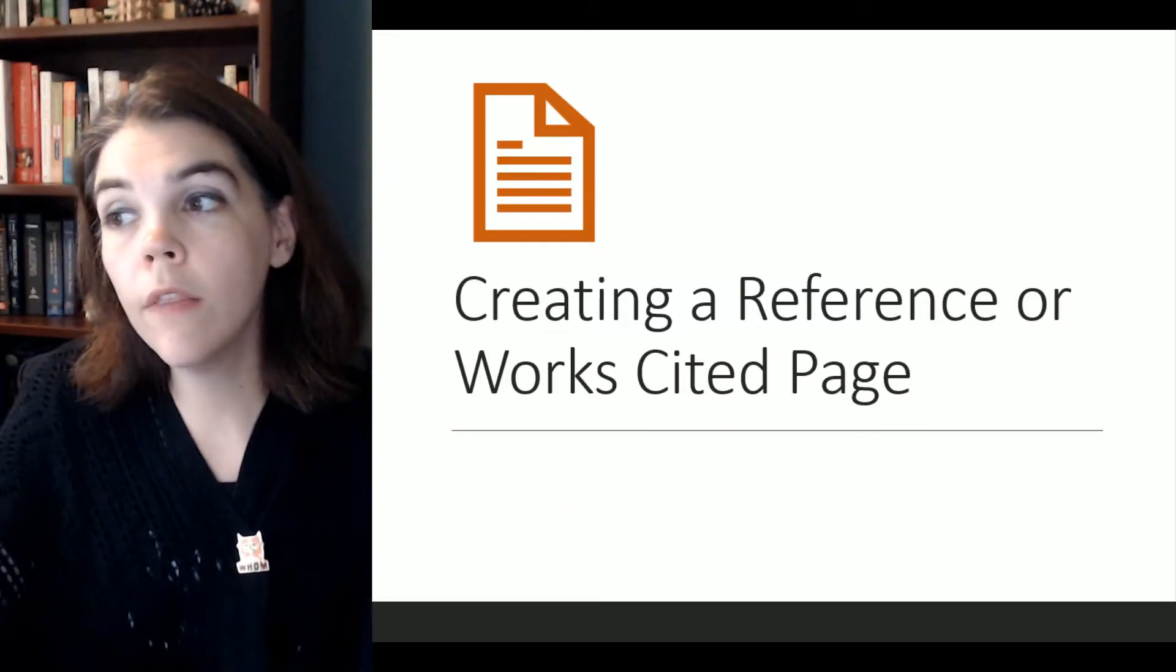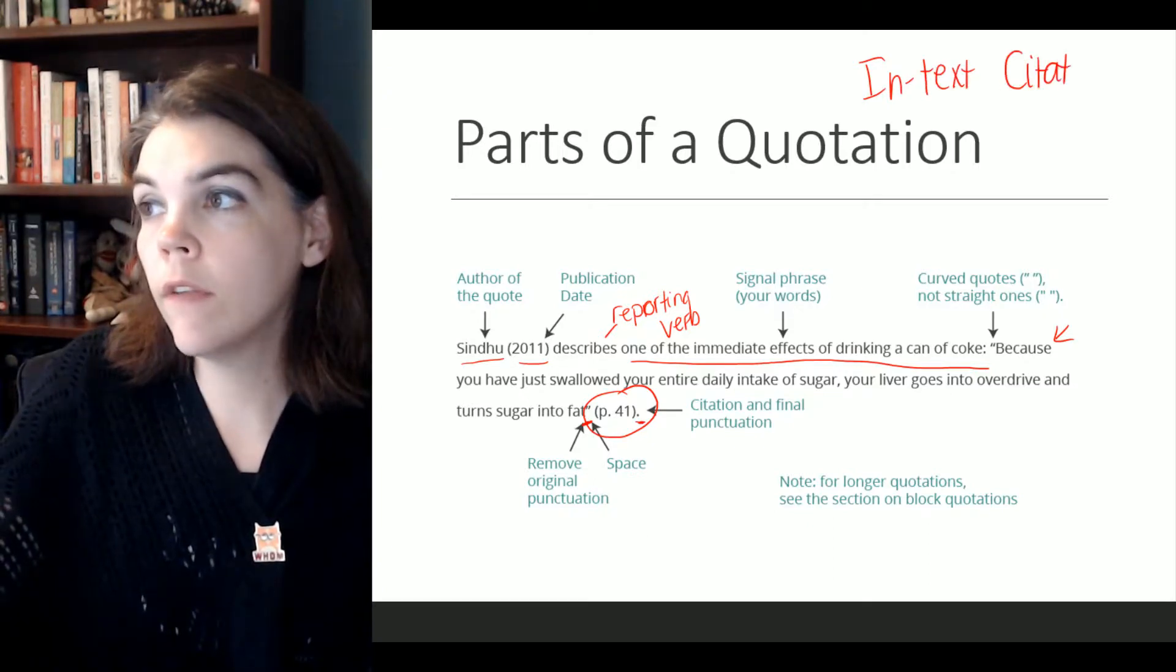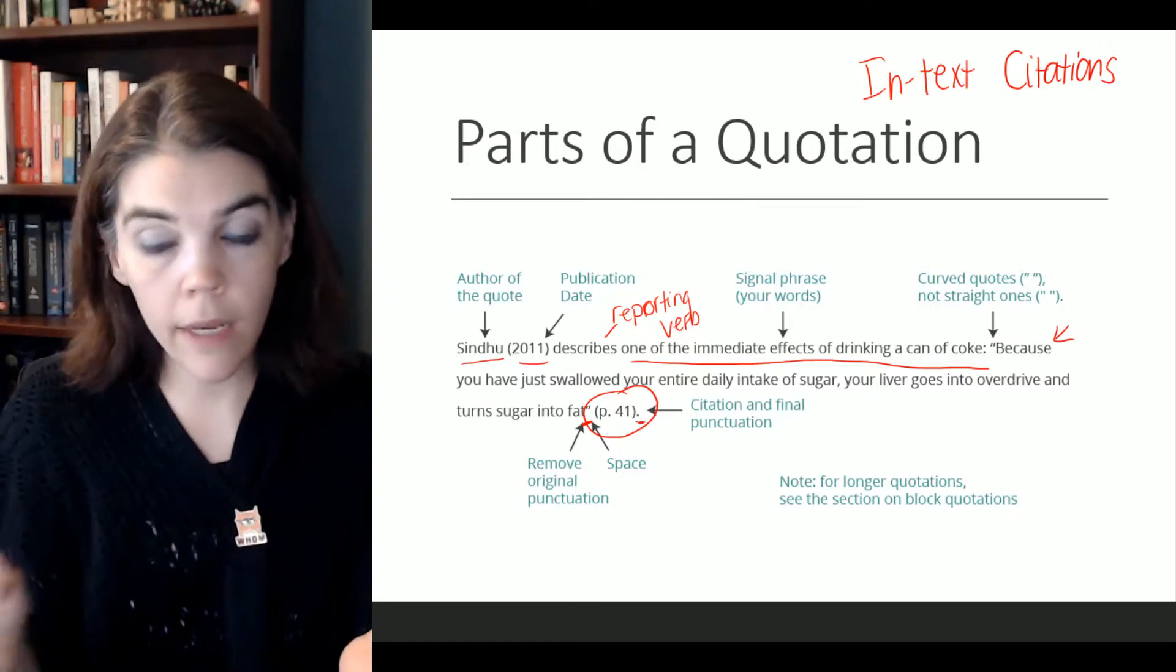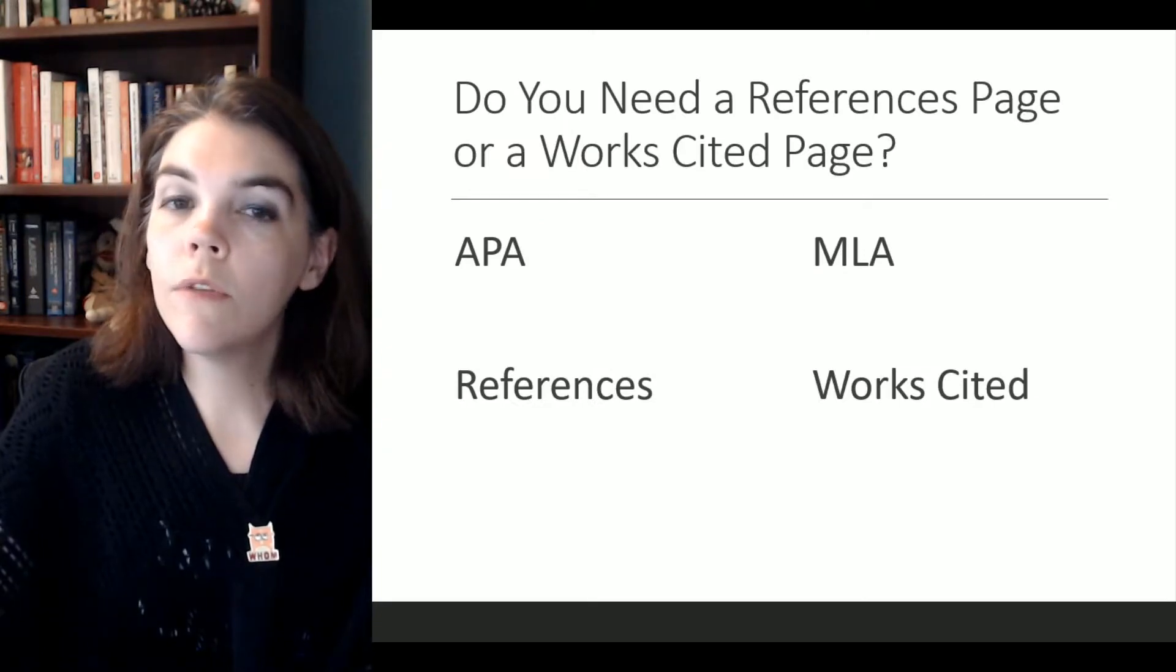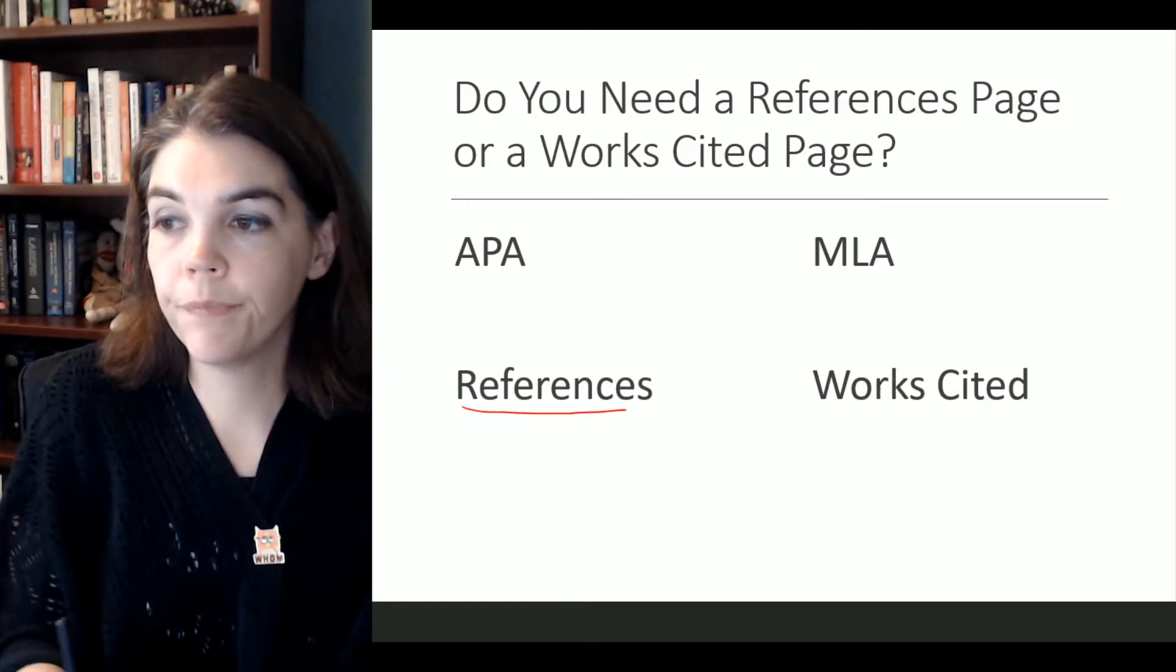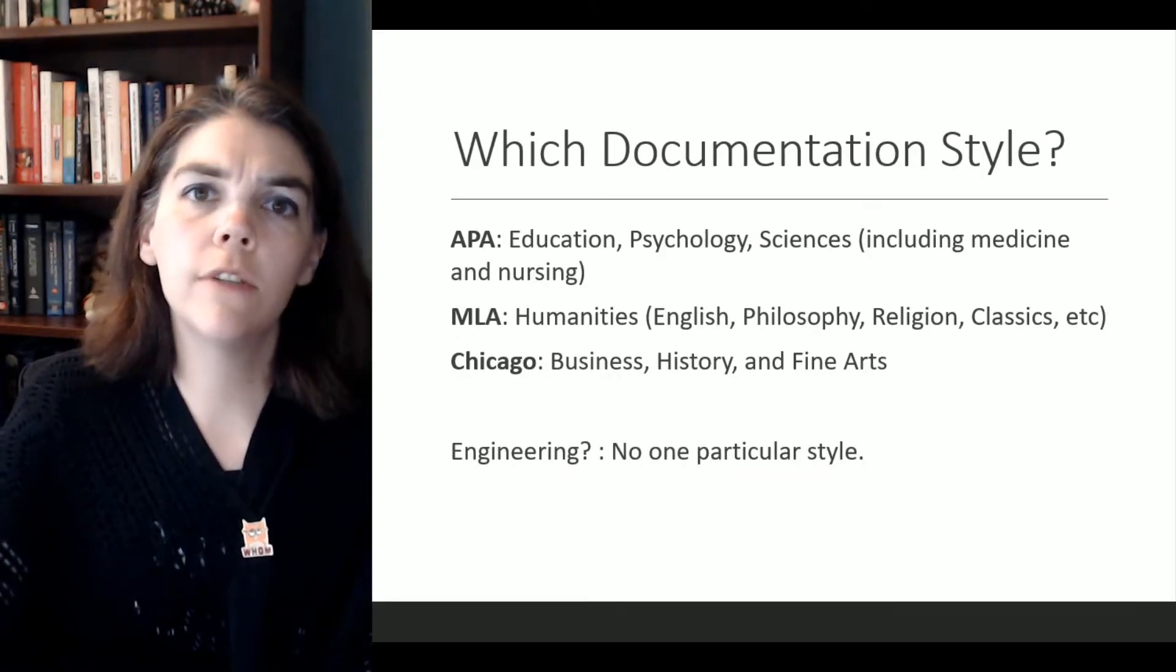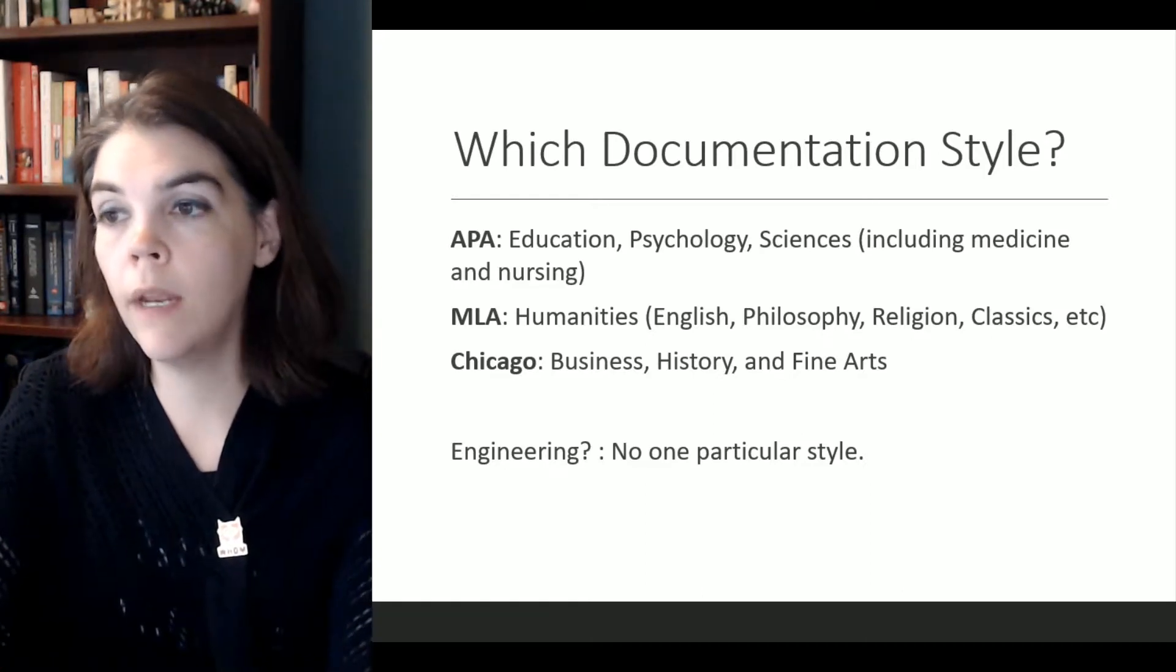So these are called in-text citations. In-text citations can be quotations, they can be paraphrases, they can be summaries. But the point is that they all happen within your paper. At the end of your paper, you have something called a reference page or a works cited page. If you're writing APA documentation style, you're gonna have references. That's what your page will have at the top. If you're using MLA, you're gonna have something called works cited. So which documentation style? This is a part where you look at your writing assignment sheet and see what your teacher has specified on your writing assignment.